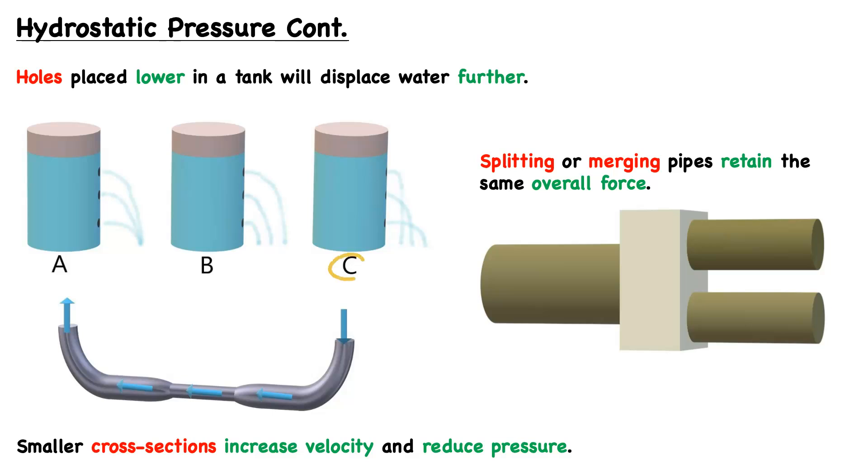The correct answer is C. Let's think about this. Hydrostatic pressure increases as you go down. The more water that is above, the greater the weight and therefore the greater the pressure. In option C, we can see that the hole at the bottom is ejecting water the farthest, and oppositely, the hole at the top is ejecting water the closest. This makes sense because the hole at the top is under the least amount of pressure of the three holes, while the hole at the bottom is under the most pressure. So it will exert the most force and therefore travel the farthest.